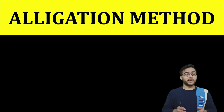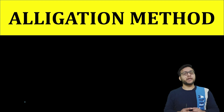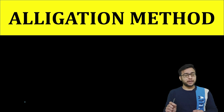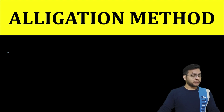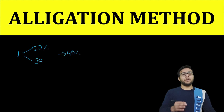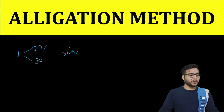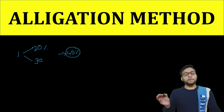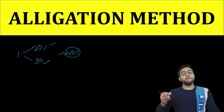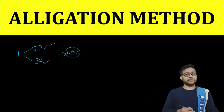Allegation Method को हम ऐसे समझेंगे — अगर हमारे पास एक same preparation है जिसकी different strength हो। जैसे कि एक की strength 20% है और दूसरे की 30%, और हमें बनाना है 40% — तो इसी method की help से हम 40% बनाना सीखेंगे: कितने ml 20% का चाहिए और कितने ml 30% का चाहिए।